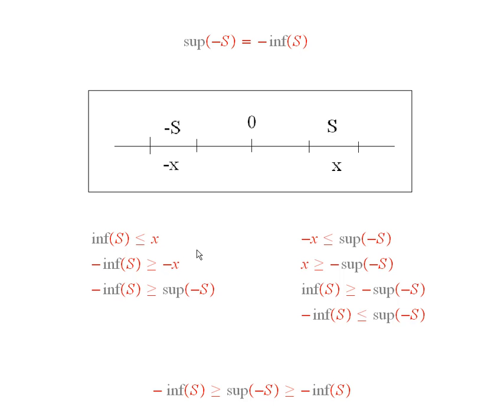Now, if I start with something in S, it's bigger than or equal to the infimum of S. So, if I multiply by negative 1, minus the infimum of S is bigger than or equal to minus x. Now, this negative x is a typical thing in minus S. So, what does this say? This says that minus the infimum of S is an upper bound for minus S.